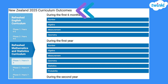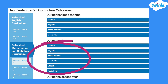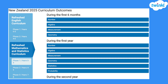Head to our 2025 curriculum outcomes page on the Twinkle website. Choose the curriculum area you're looking for — in this case, the maths curriculum. Select the year level relevant to your learners, and then choose the maths context area that you are teaching.